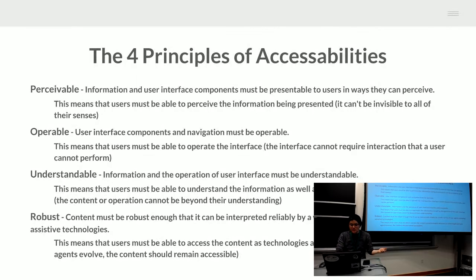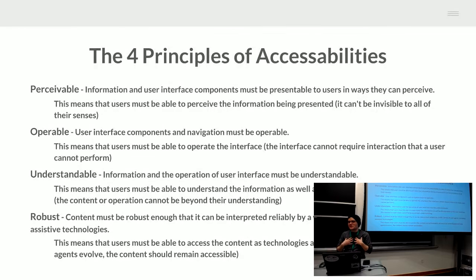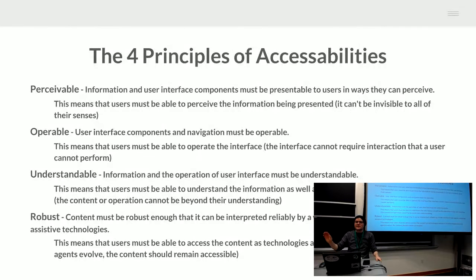Operable means user interface components and navigation must be operable — a user must be able to operate the interface. A lot of websites, especially from front-end developers, don't necessarily have a tab-through mentality. You get a beautiful design that when you try to tab through it, the focus just never gets there — that is an operability issue.